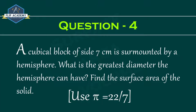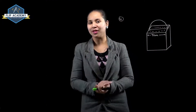Surface area and volume, exercise 13.1, question number 4. A cubical block of side 7 centimeters is surmounted by a hemisphere. What is the greatest diameter the hemisphere can have? Find the surface area of the solid. Use pi equal to 22 upon 7.